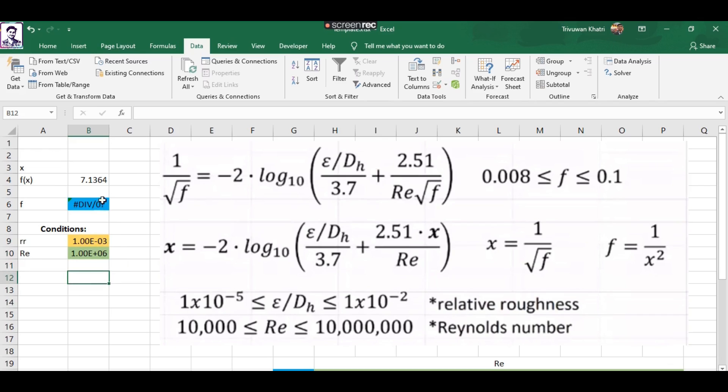It spits out the value of x, but our main motive is to find the pipe friction coefficient, which is represented by F. So in this region, I've converted the value of x to F as 1 over x squared.